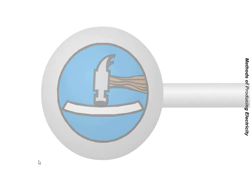Pressure. When pressure is applied to some types of materials, such as a crystal, the force of that pressure causes the electrons to be dislodged from some of its atoms. The diagram here shows a crystal before pressure is applied. The material has no charge. At the right, pressure is applied. It causes the electrons to leave one side of the material and accumulate on the other side. Thus, positive and negative charges are built up on opposite sides. Then the pressure is released. The electrons return to their orbits and the material becomes uncharged.